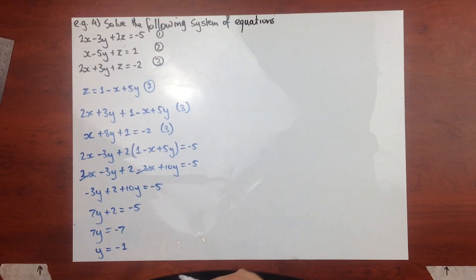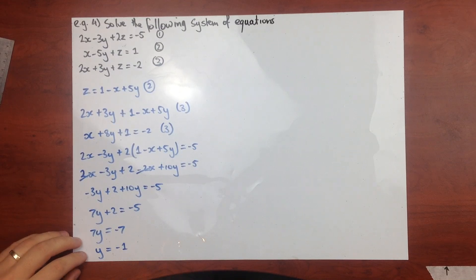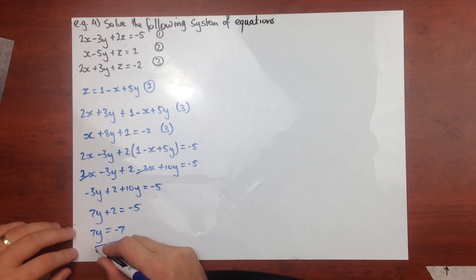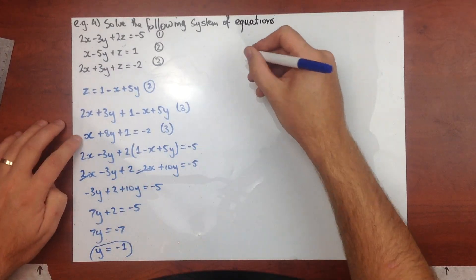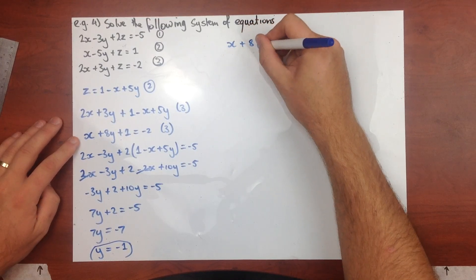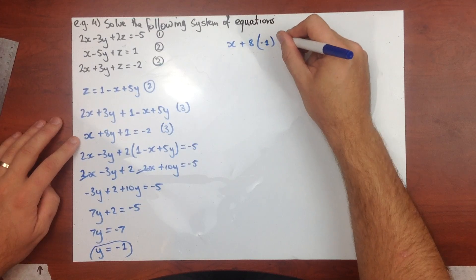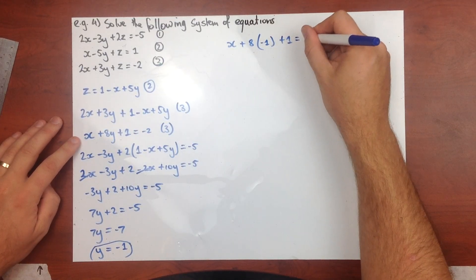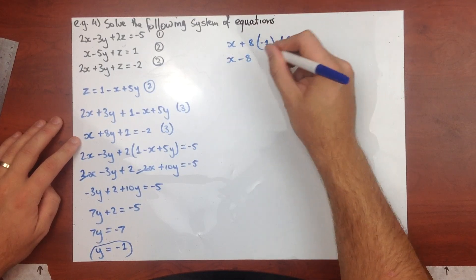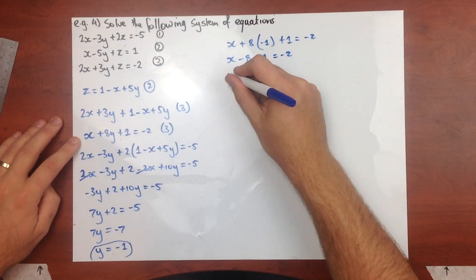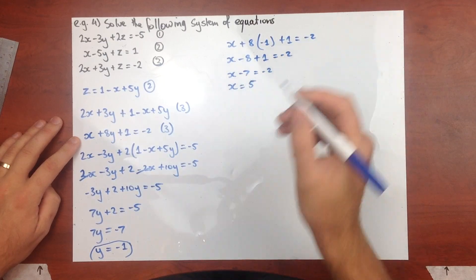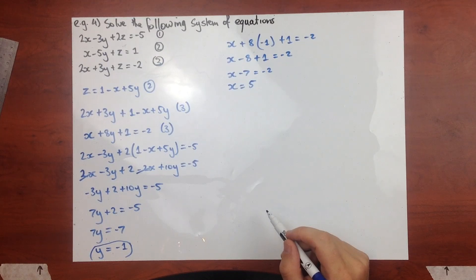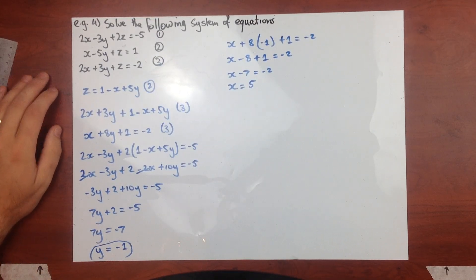It was fortunate that the x terms cancelled — most of the time you'd still have two equations in x and y to work through. Now we know y equals negative 1, we substitute back into the simplified equation three: x plus 8 times (negative 1) plus 1 equals negative 2, giving x minus 7 equals negative 2, so x equals 5.